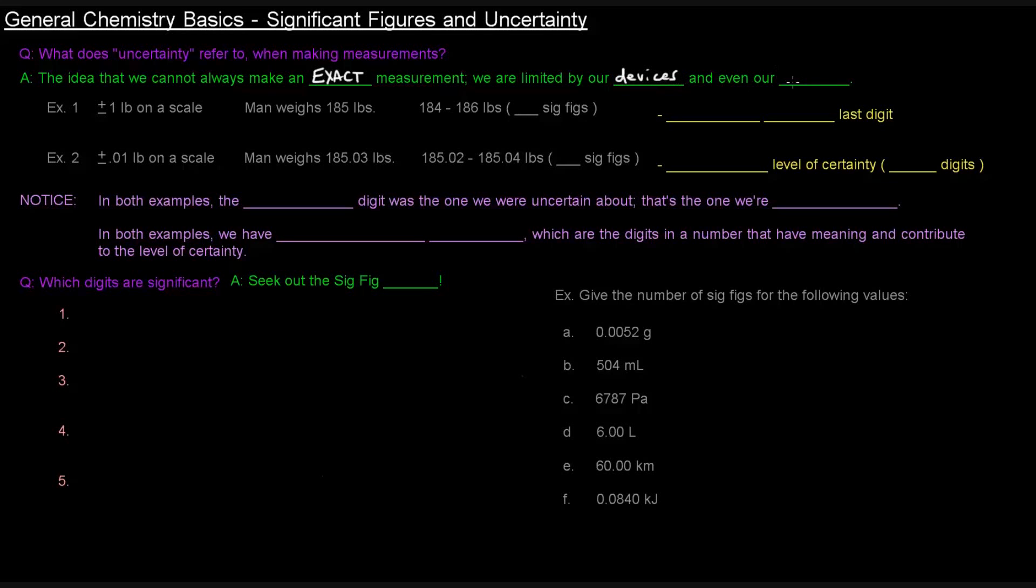We are limited by our devices that we use to take the measurements, and we're also limited by our senses, like we use our eyes and our ears and our noses to sort of gauge what it is we're measuring. So we're limited in our ability to make an exact measurement.